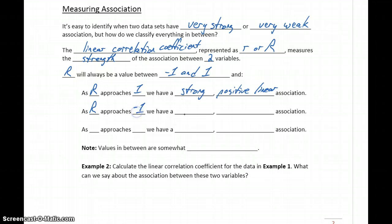As r approaches negative 1, we have a strong, negative, linear association. So, as we get values closer to negative 1, the strength of that association becomes stronger, and we classify it as a negative association.